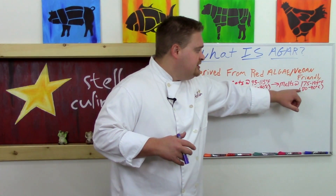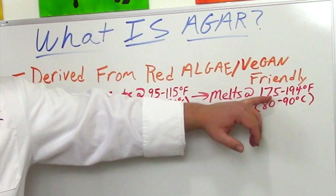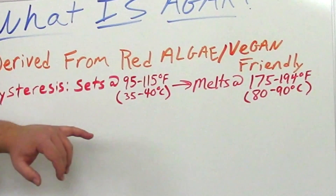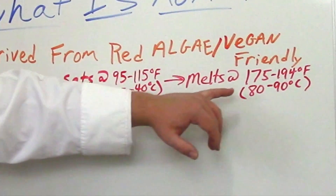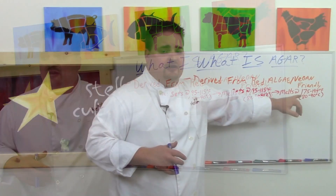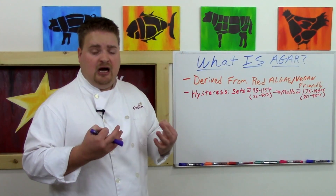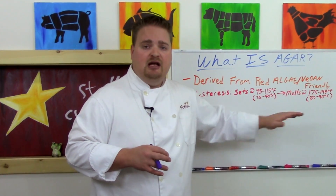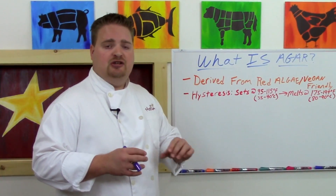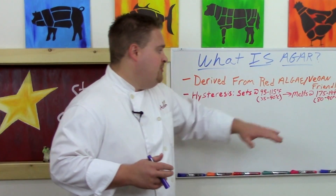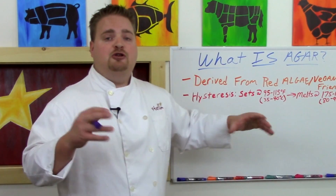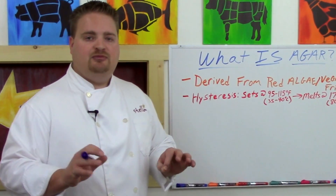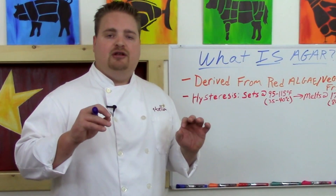At sea level our boiling point is 212 degrees Fahrenheit, so something at 175 degrees Fahrenheit is extremely hot. That means you can actually heat up an agar gel — as long as you don't bring it to a simmer or past 175 degrees Fahrenheit — and serve a warm gel, something that isn't possible with gelatin.